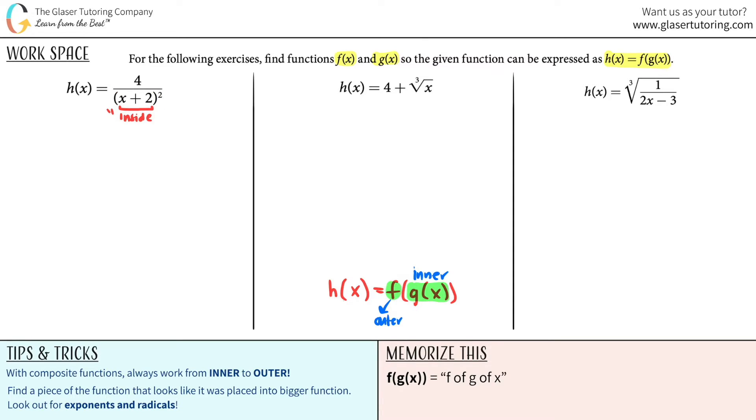It looks like this is inside, keyword, this raised to the second. Oh, inside, inner, tomato, tomato. What do you think the inner function was? And the inner function here, they want g of x. The inner function is x plus 2 because that's trapped. Stuff that is trapped between parentheses or square roots or cubed roots, that's always going to be your inner function. That's the hardest part.